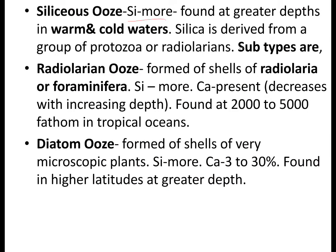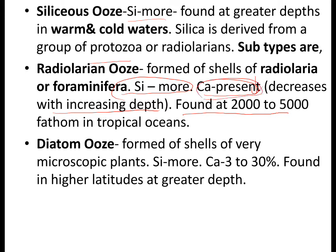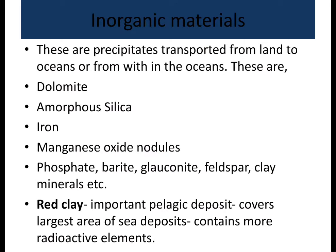Siliceous ooze has more silica content and is found at greater depths in both warm and cold water. Silica is generated from a group of protozoa called radiolarians. Radiolarian ooze is formed of shells of radiolaria — silica is dominant but calcium is also present, decreasing with increasing depth. It is found between 2,000 to 5,000 fathoms in tropical oceans. Diatom ooze is formed of shells of very microscopic plants; silica content is dominant, with calcium around 3 to 30%, found at higher latitudes and greater depths.